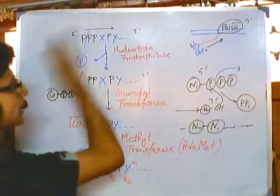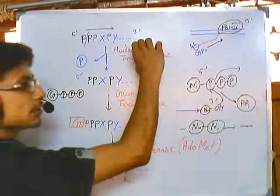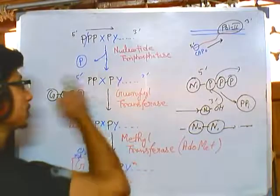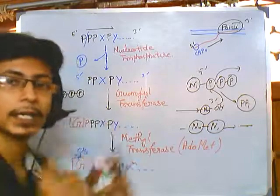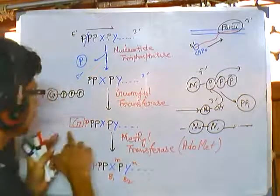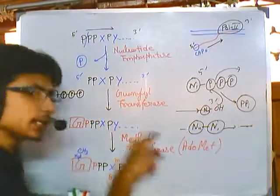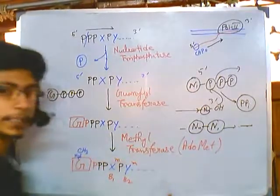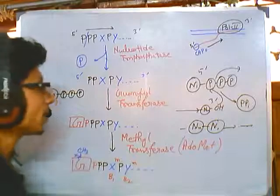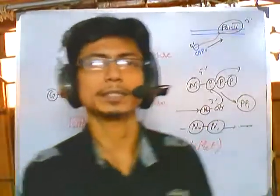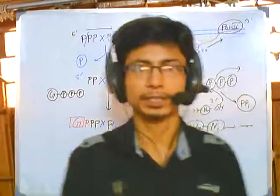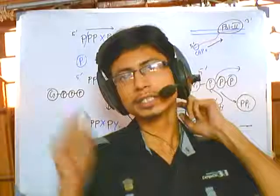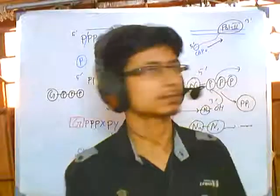To summarize the mechanism: first, the terminal phosphate is clipped by nucleotide triphosphatase. Then guanosine triphosphate comes in and guanylyl transferase adds it via a 5'-5' phosphate linkage. Finally, methyltransferase modifies the guanosine base, and if further bases need modification it does so as well. This is the complete process of how 5' capping is achieved.